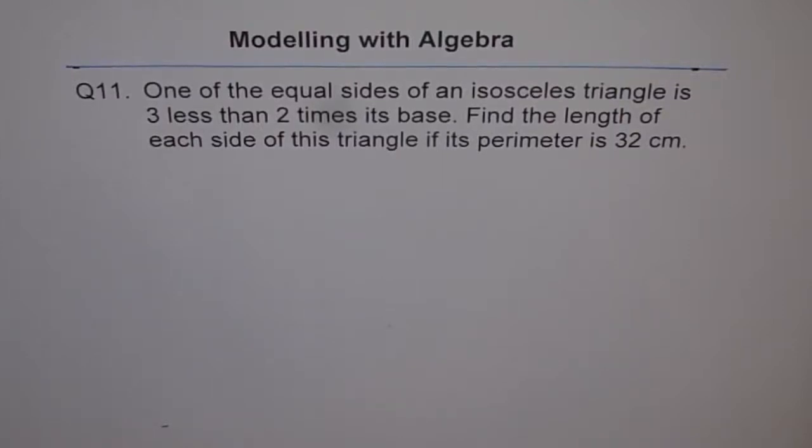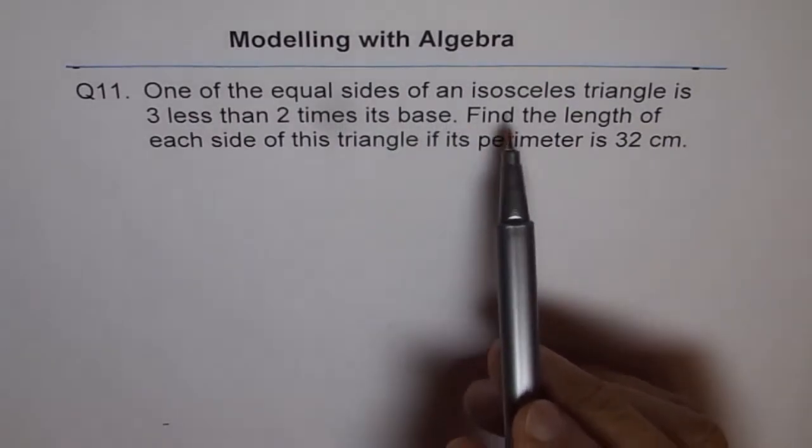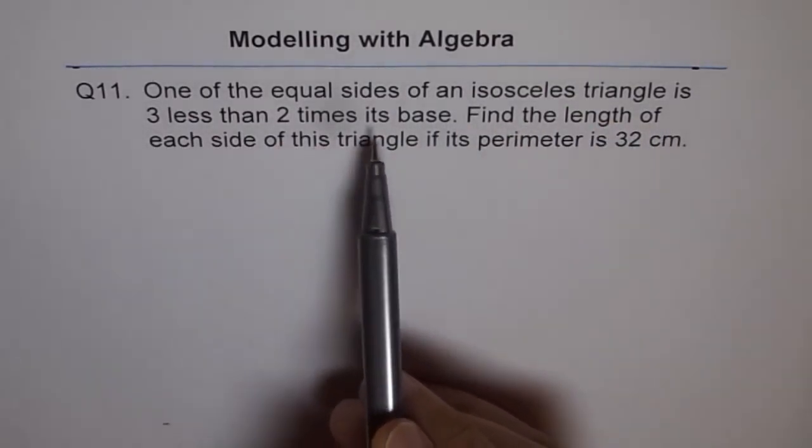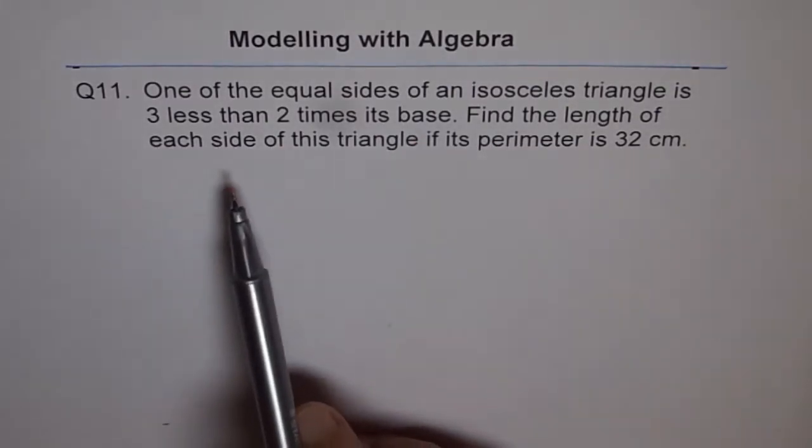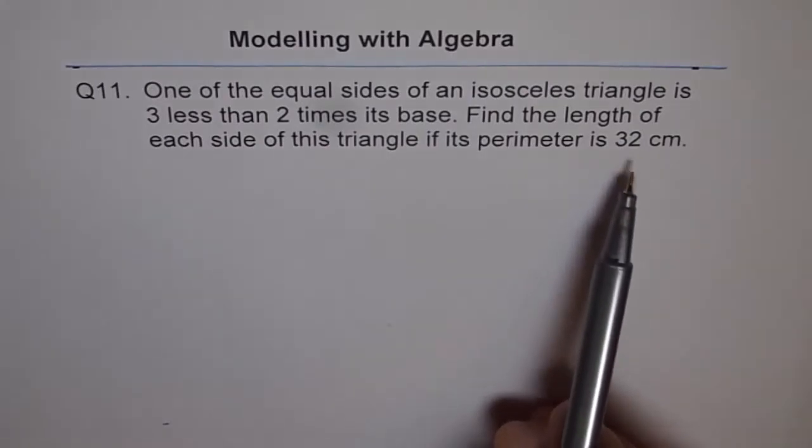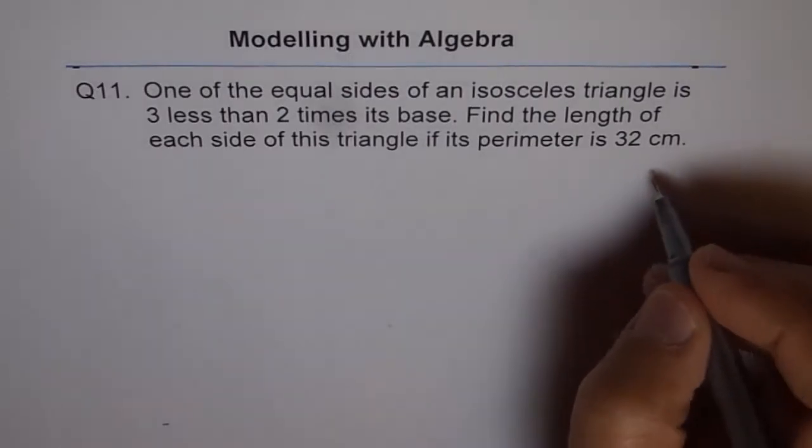Modeling with Algebra, question 11. One of the equal sides of an isosceles triangle is 3 less than 2 times its base. Find the length of each side of this triangle if its perimeter is 32 cm.